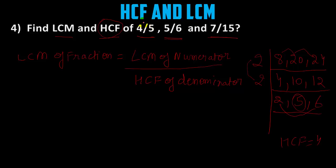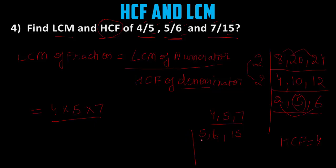The numerators are 4, 5 and 7, and the denominators are 5, 6 and 15. First we find LCM of the numerators: 4, 5 and 7. Nothing is common in all three numbers, so LCM = 4 into 5 into 7. Now we find the HCF of the denominators: 5, 6 and 15. Nothing is common in all three except 1, so HCF = 1. So the LCM of the fractions = 140 divided by 1, which is 140.